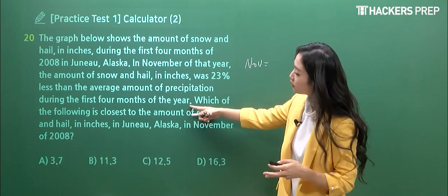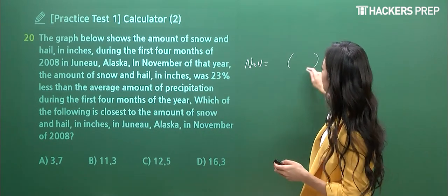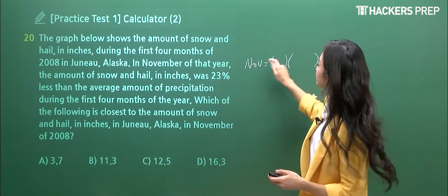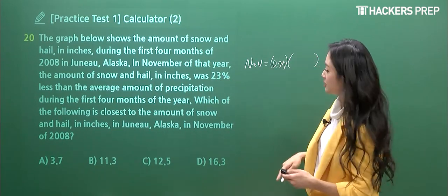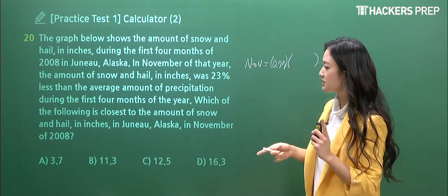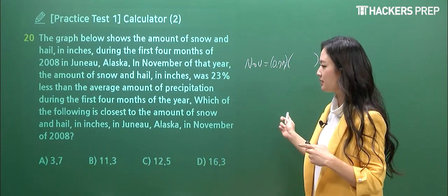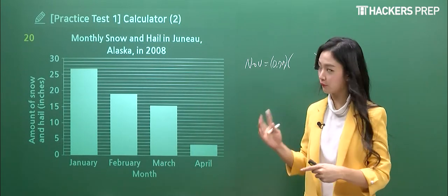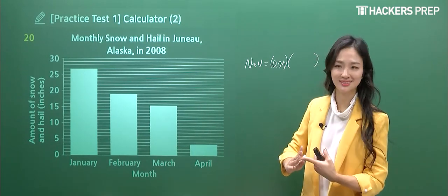In November of that year, notice how they're only presenting up to April, and they're telling us that in November, the amount of snow was 23% less than average precipitation for the four months of the year. So what do you have to do? You have to find the average for the four months, and we're applying a 23% decrease. So we're only looking at the remaining 77%.